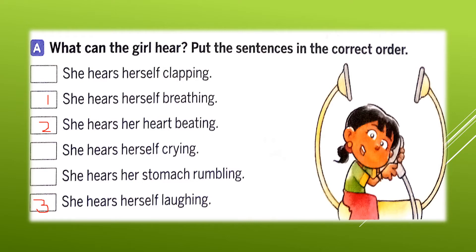Number 4: she hears herself crying. After that, number 5, she hears herself clapping. Then last, number 6, she hears her stomach rumbling. So this is the correct order. Understood? Now let's go to the next question.